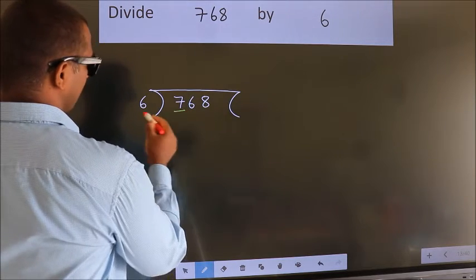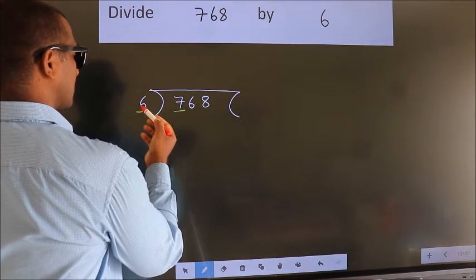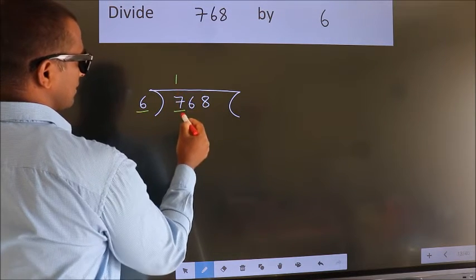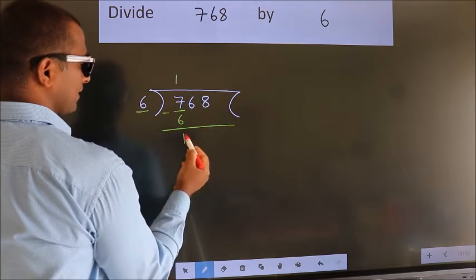Here we have 7. Here 6. A number close to 7 in the 6 table is 6 ones, which is 6. Now we should subtract. We get 1.